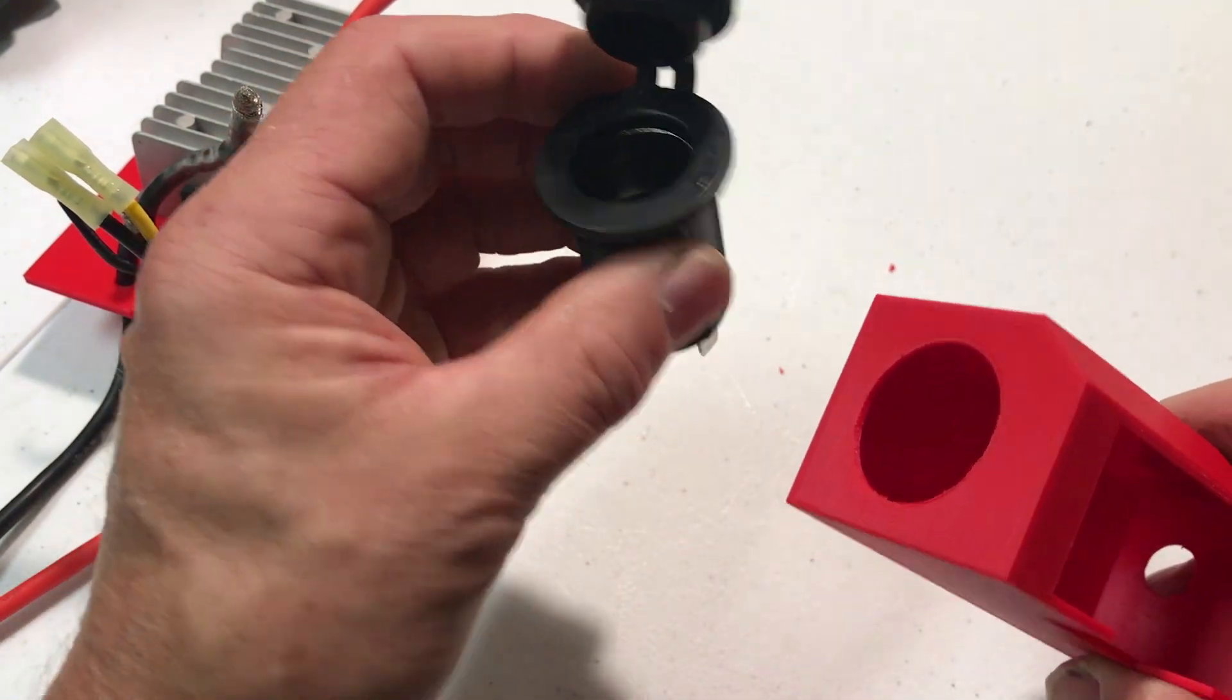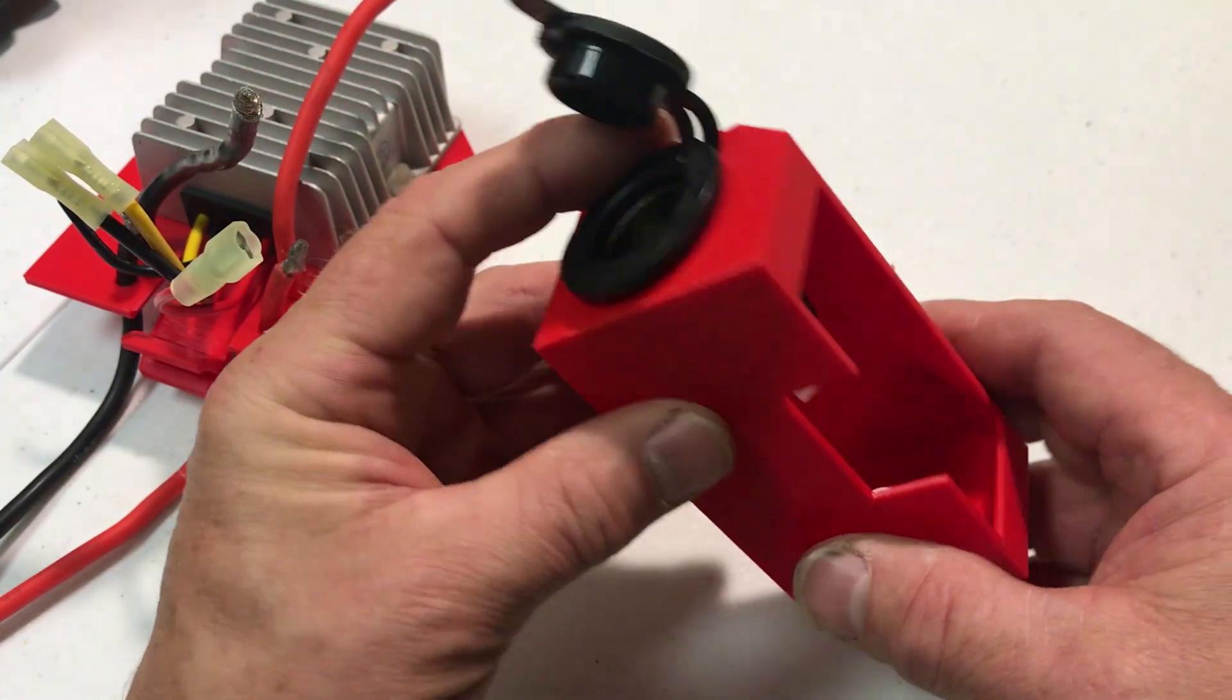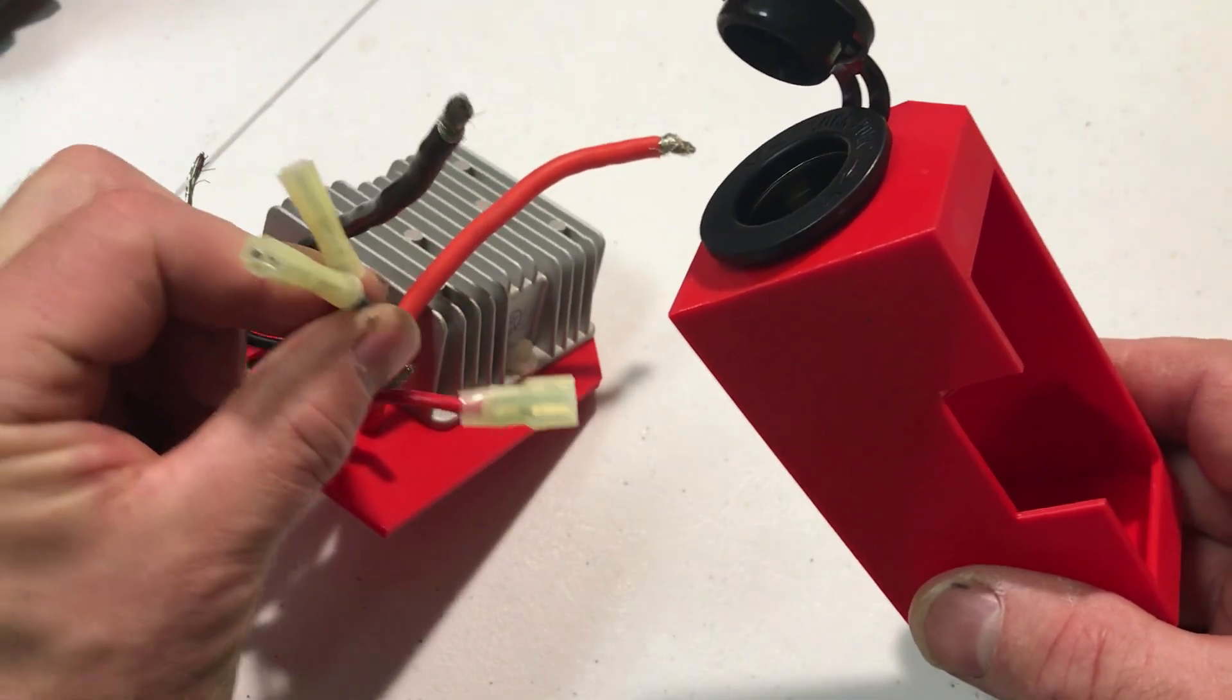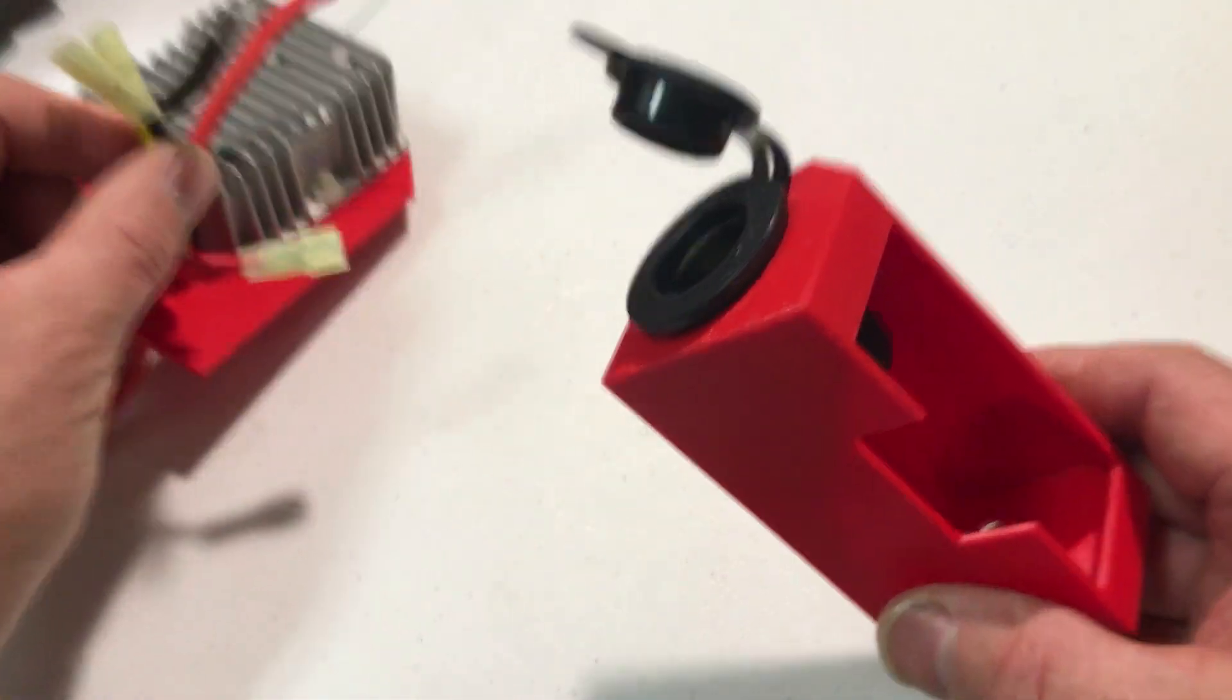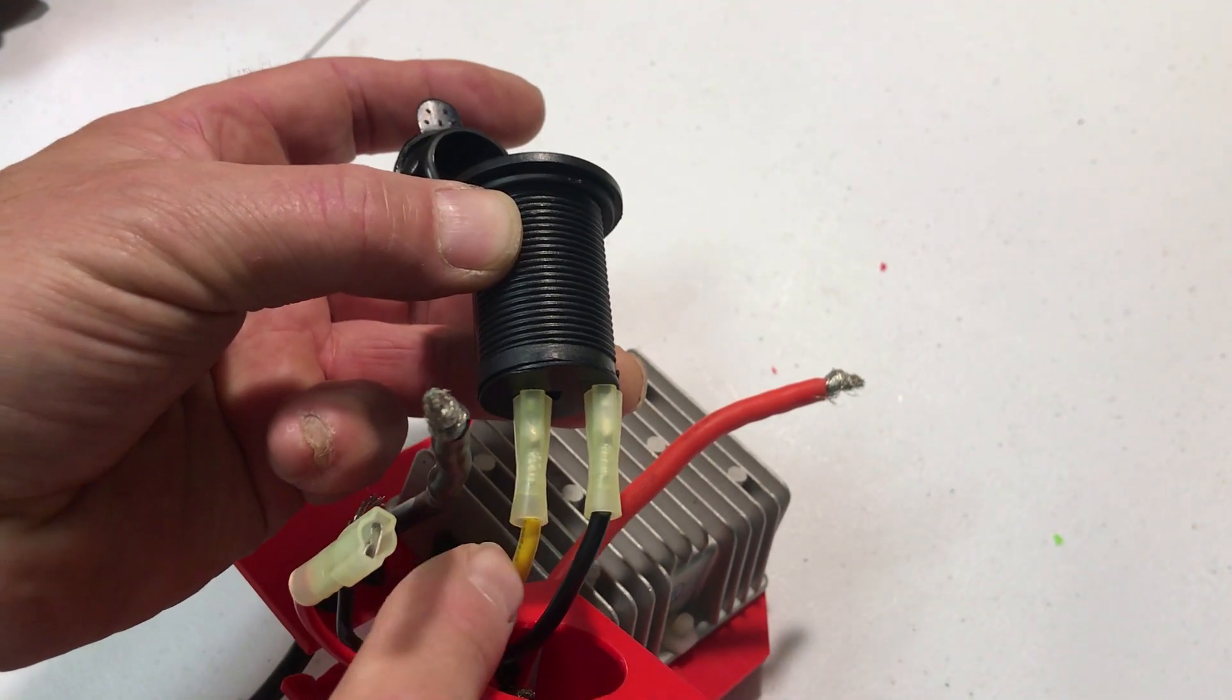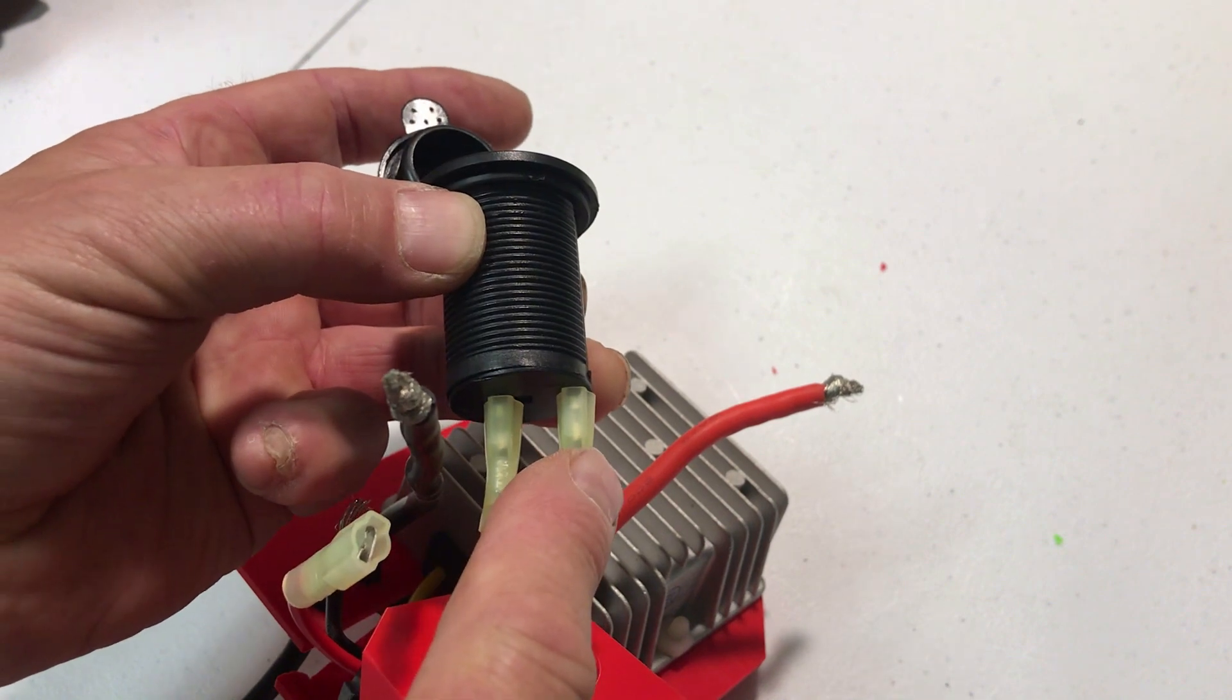We've got the cigarette lighter socket that's going to go in here and then we're going to connect the two outputs from the DC to DC converter to the back of it. We're going to make sure that you put the plus yellow wire to the plus and the black wire to the minus.